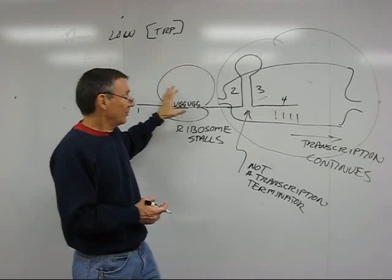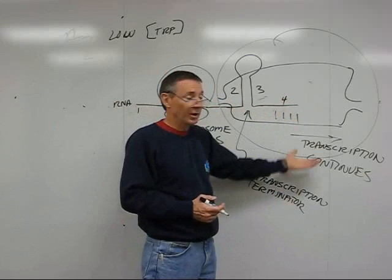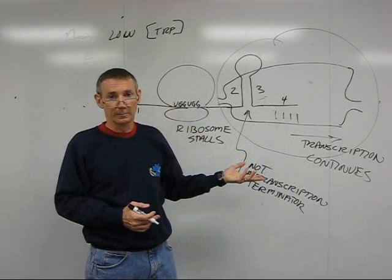So high tryptophan, you get termination, early termination of transcription right at this point. Low tryptophan, transcription continues all the way through the polycystronic messenger.